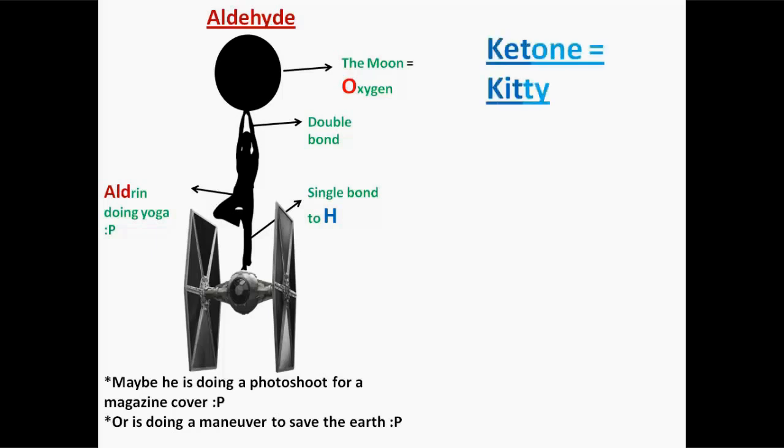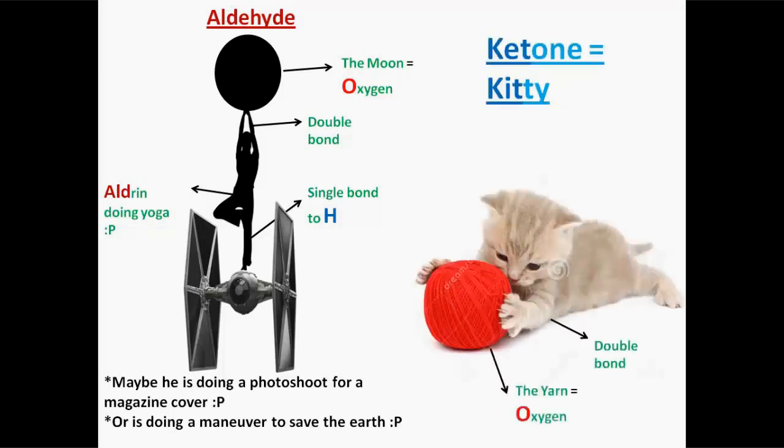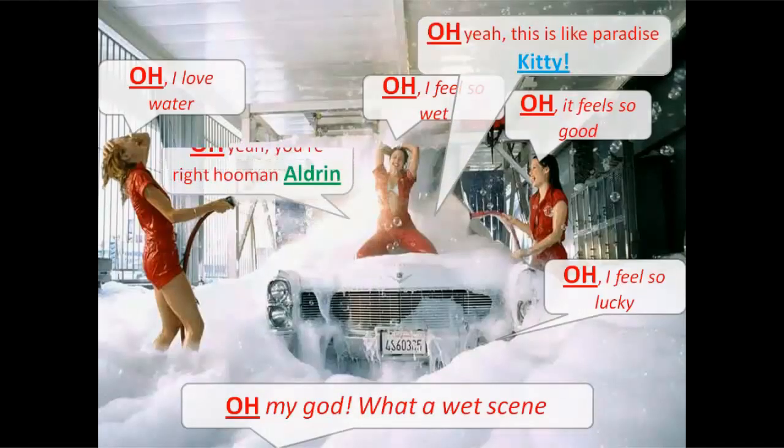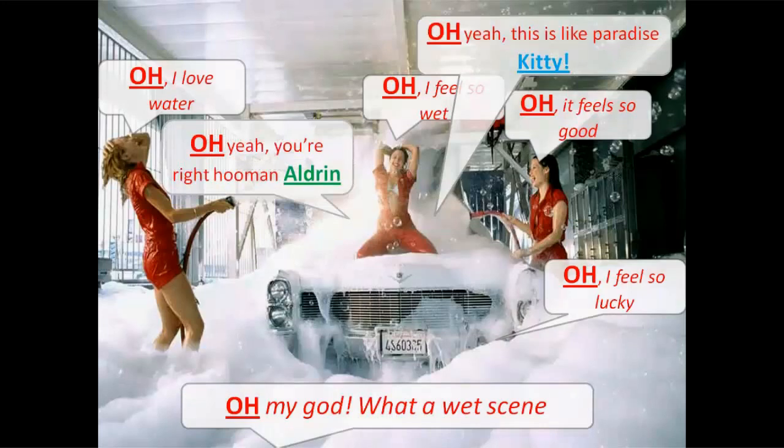As about ketones, I've chosen a kitty to represent it, since the three letters of each rhyme with each other. You see that the yarn is being sandwiched between our kitty's paws, just like the carbonyl group is sandwiched between two radical groups.